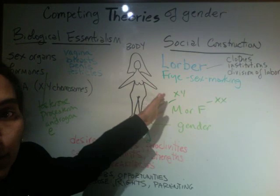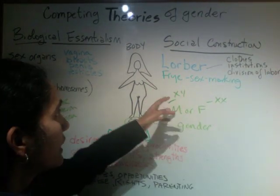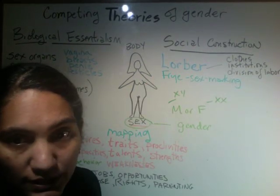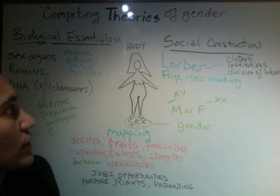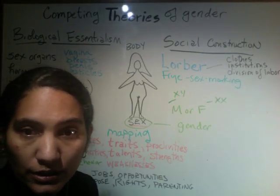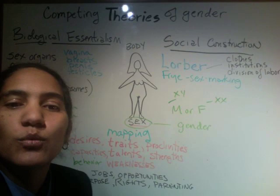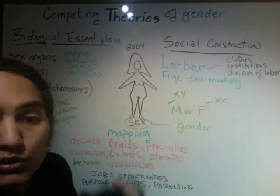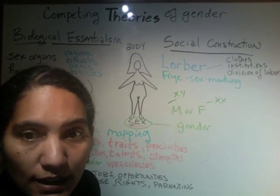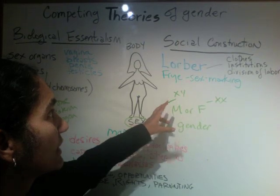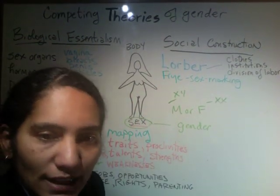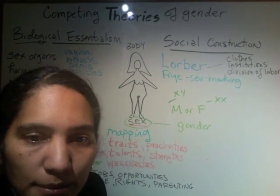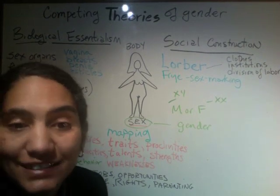Now let's contrast that with the social constructionist view. Readings like Lorber, Frye, and Nicholson explicitly talk about the social construction of gender. What people like Lorber argue is that there is no one-to-one correspondence between the body — the biological sex — and the actual gender as defined by society. What social constructionists say is that gender is a social construct, created by societies for particular reasons, and it has nothing to do with any kind of essence we're born with.